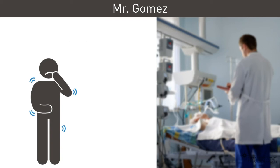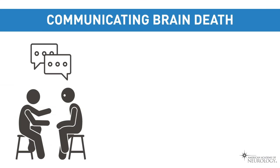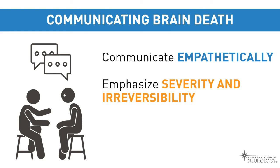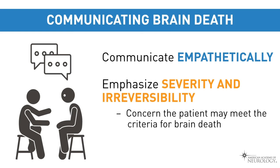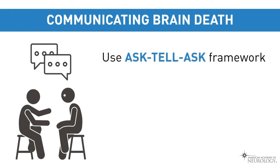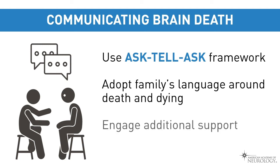The public does not understand brain death and the distinction between coma or vegetative state and brain death. It is important to communicate empathetically and to emphasize the severity and irreversibility of the patient's condition and your concern that the patient may meet criteria for brain death, which is legally equivalent to the heart and lungs not functioning. The purpose of the evaluation is to look for any sign of life. The ask-tell-ask framework can be useful to ensure understanding. In discussing end-of-life matters, it is often helpful to adopt the language the family uses around death and dying when appropriate. Support from a social worker, chaplain, palliative care specialist, or religious leader should be considered.